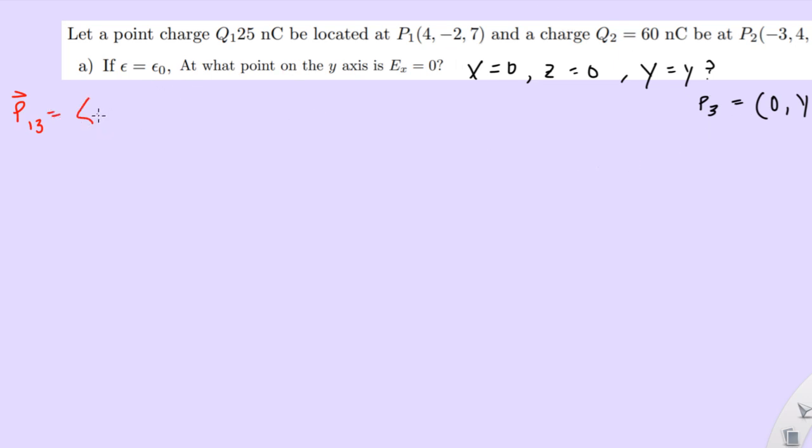So, let's get that started. So, r13 is going to be the difference of these two points, right? So, 0 minus 4 is negative 4. y minus negative 2 would be y plus 2. And then, 0 minus 7 is negative 7. Now, we can find the magnitude of this vector, which is just going to be the distance between the two points. 4 squared plus (y + 2) squared plus 7 squared.